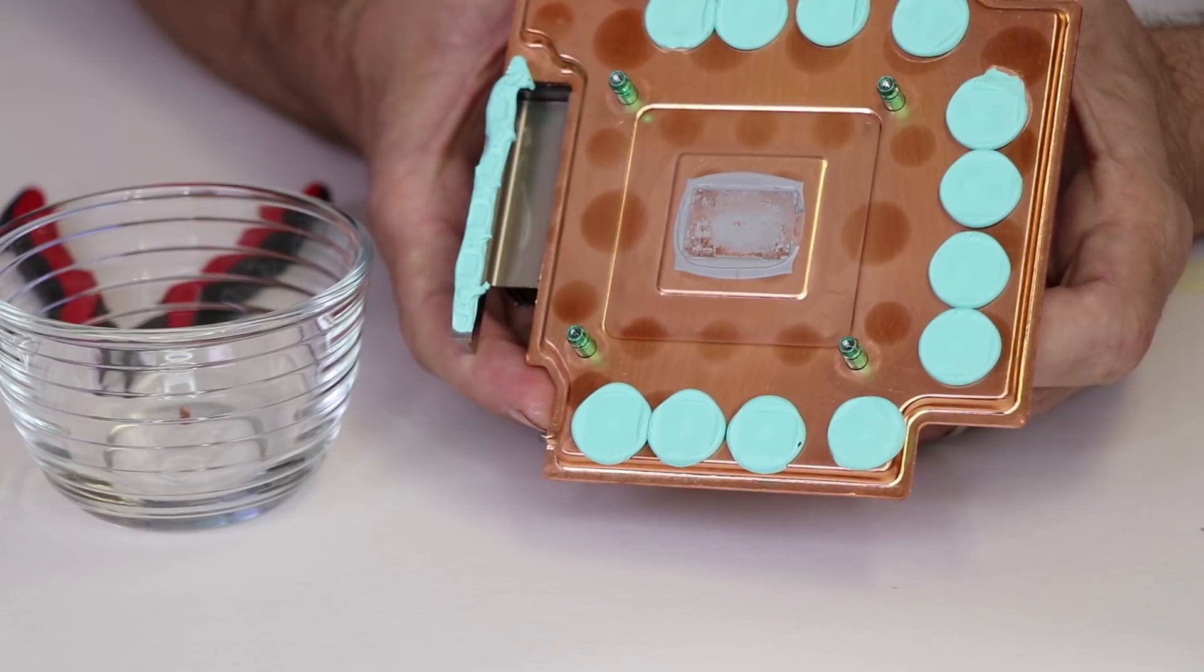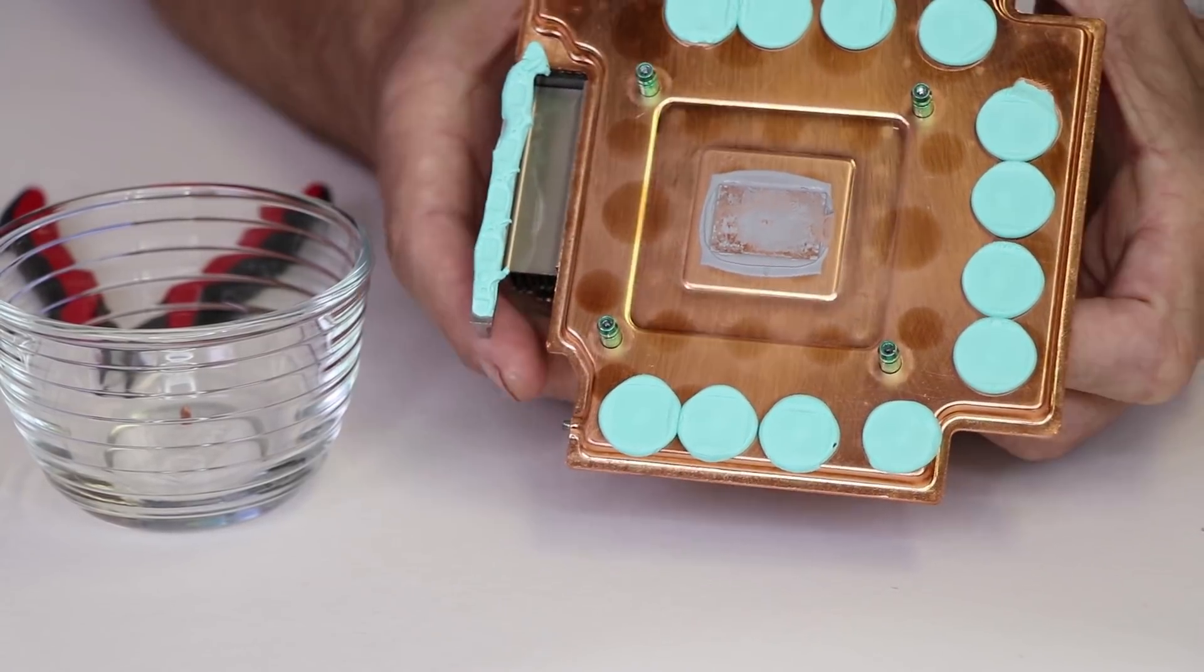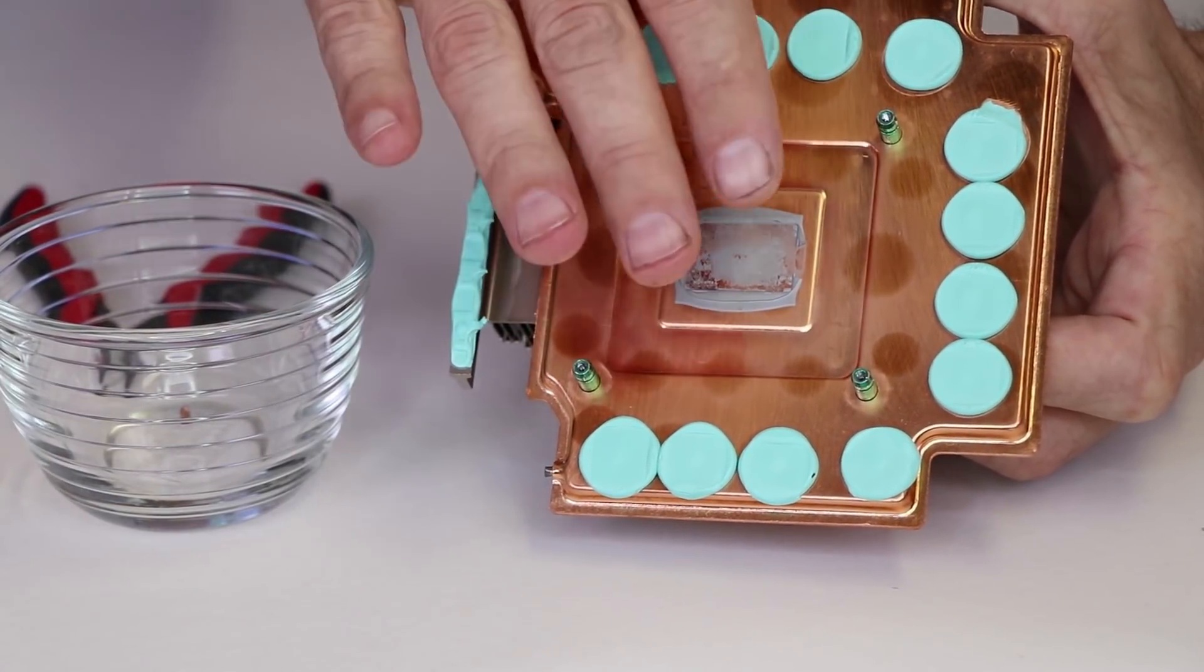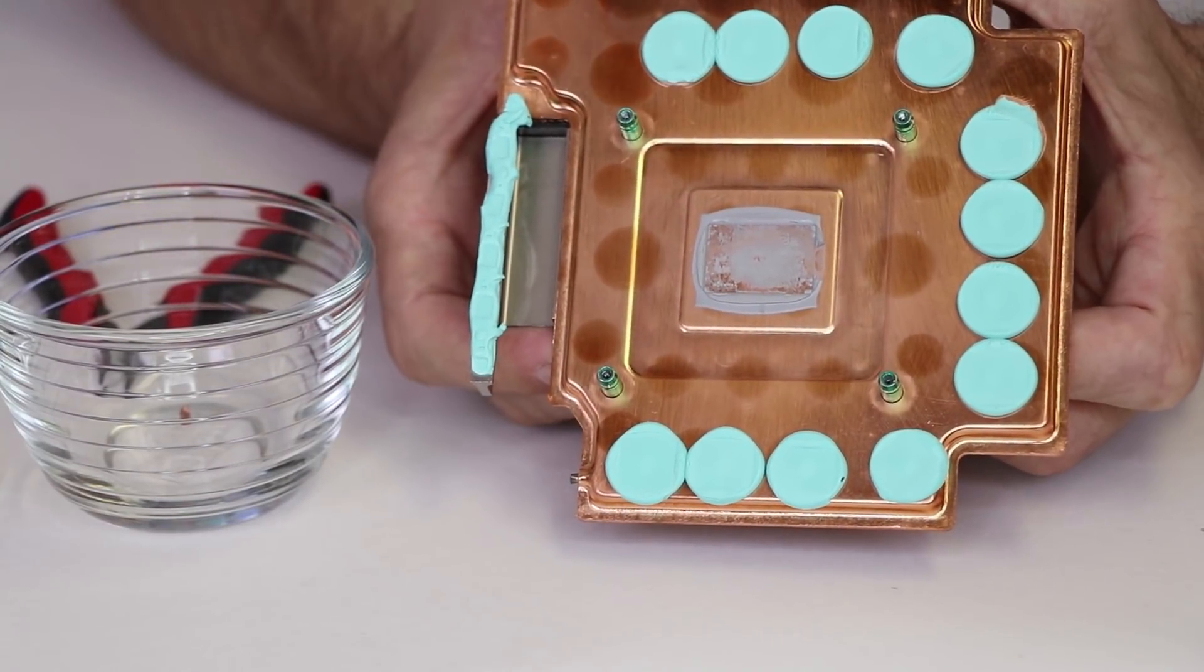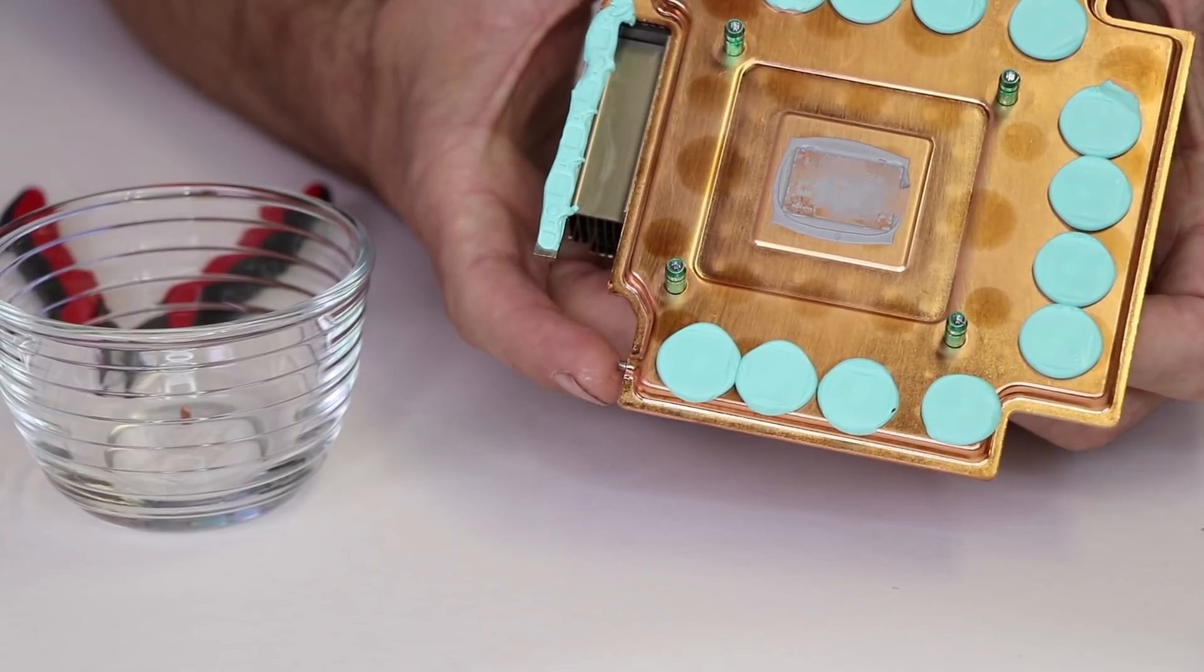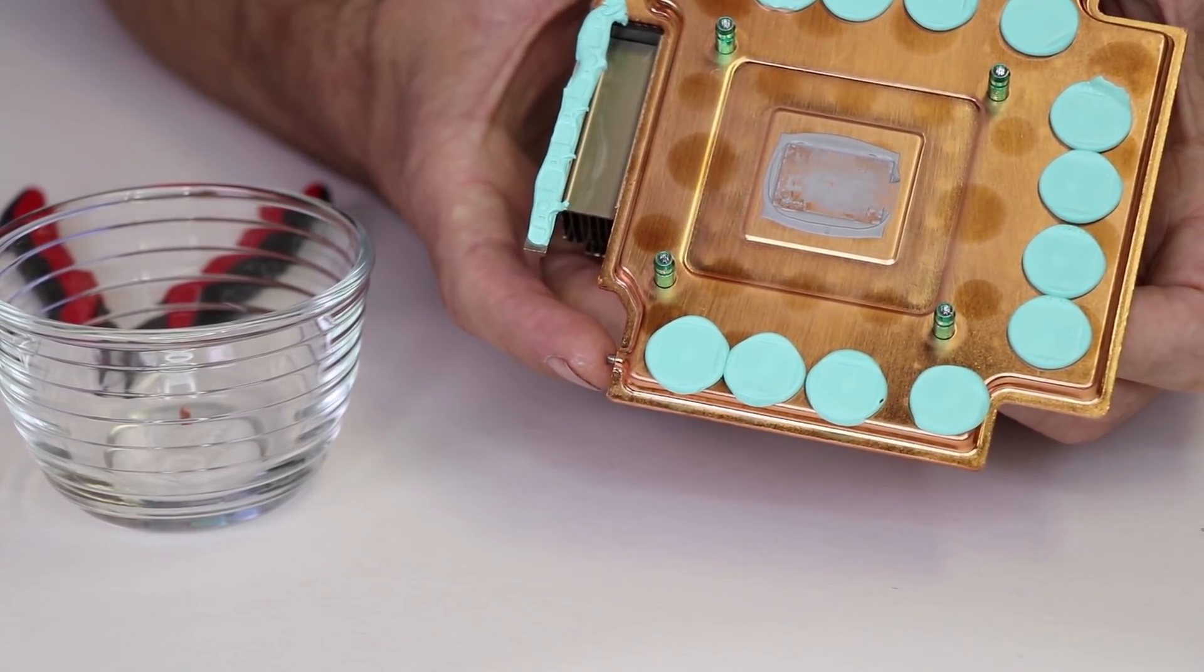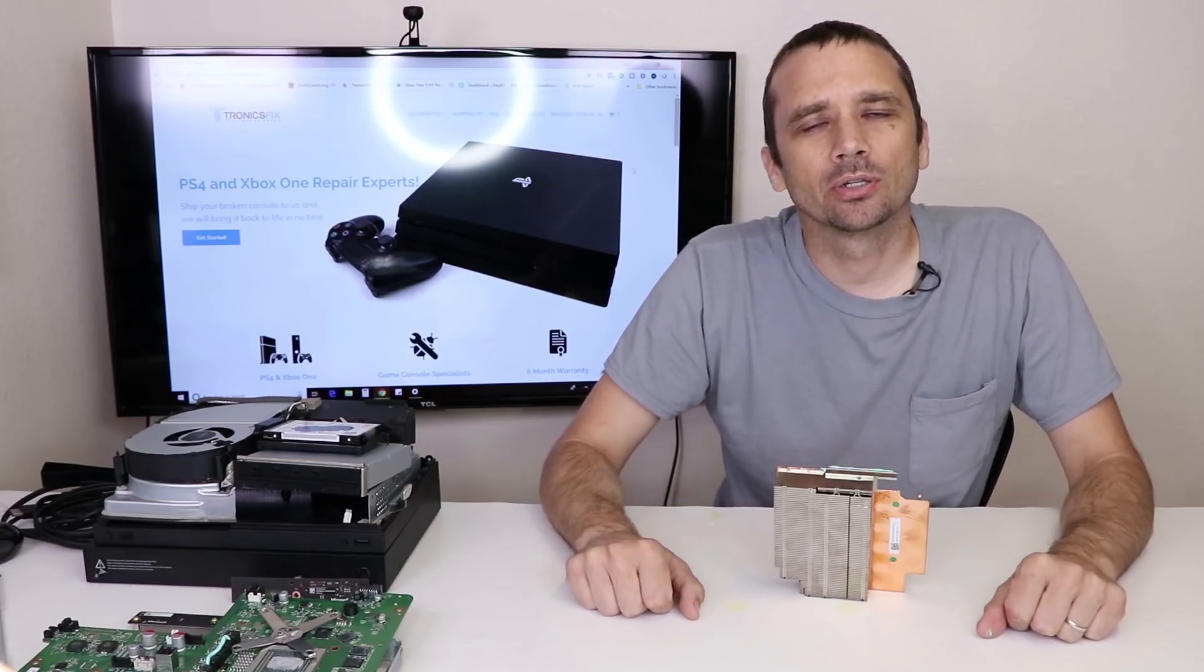So there we have it—the vapor chamber on the Xbox One X looks like it may be just a vacuum chamber. Now my next plan with this Xbox One X is to install liquid metal onto this heat sink and then reinstall it into the console and see if it will actually stay cool without that vacuum on here. I probably will re-solder the end of this on so it doesn't let moisture in and out, but I might just leave it how it is just to see what it does.